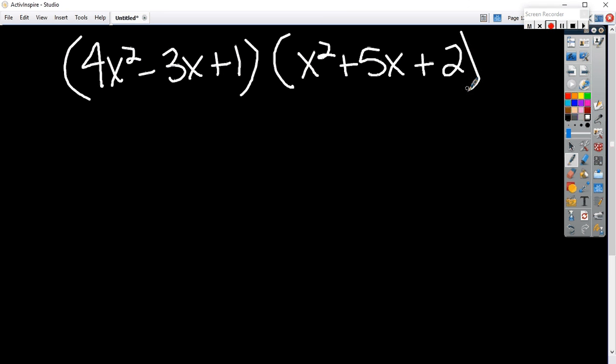Well, you can multiply anything. Multiply is not hard. Let's start with the first term, and it is going to distribute to everything in the parentheses. So, 4x squared times x squared is 4x to the fourth.